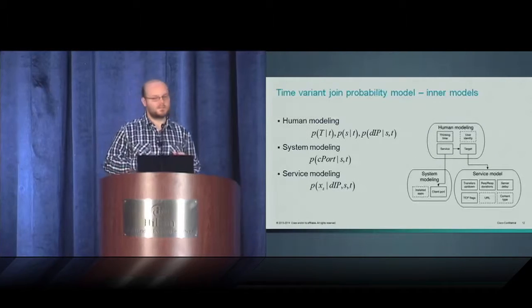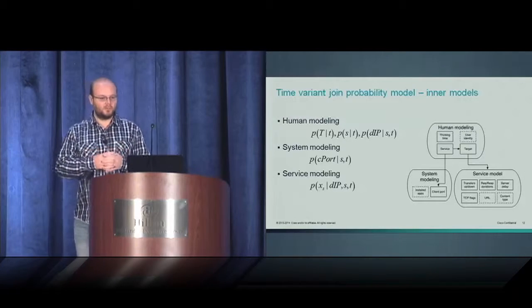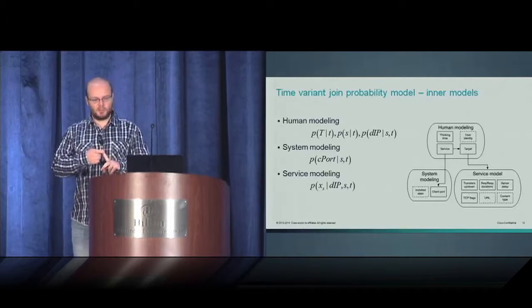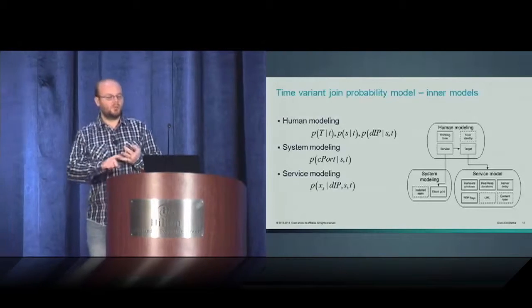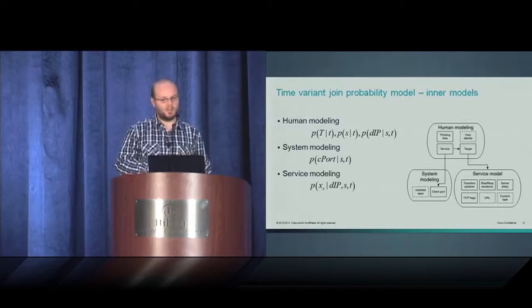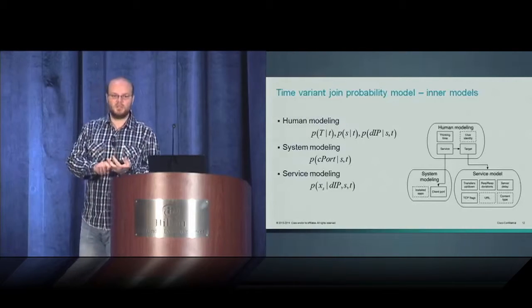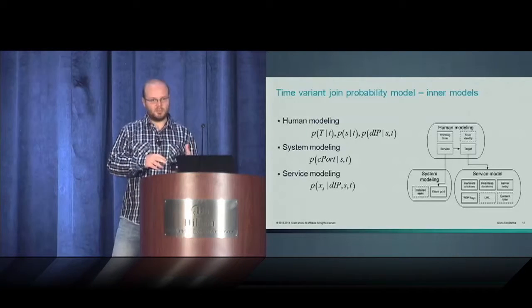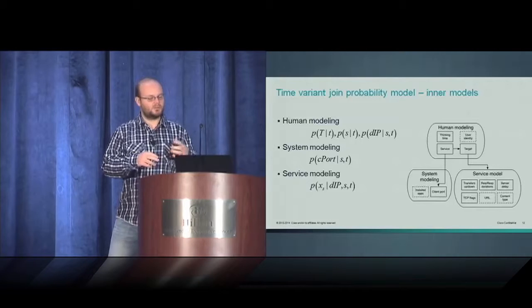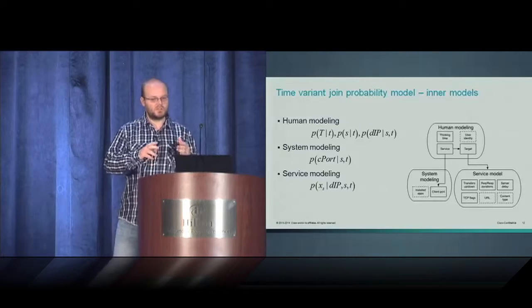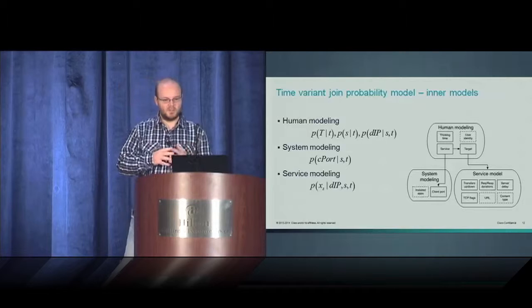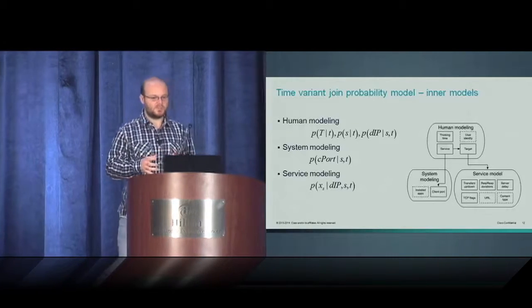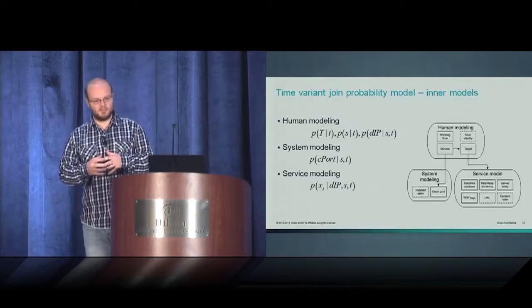To formalize this model, we use the following probabilities. The human modeling is composed of three major probabilities: probability of thinking time given the daytime, probability of service given the daytime, and probability of target or destination IP given the service and the daytime. Service modeling is formalized as probability of client port, which is the source port of the request, given the service and the time.